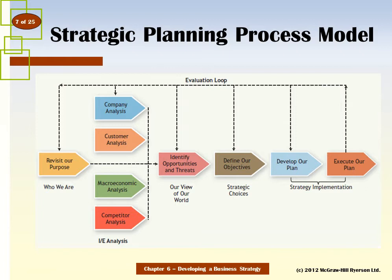The general steps in defining our strategic planning roadmap are as follows. First, revisit and understand our purpose and destination — making sure everybody in the company understands who we are. From there, conduct an internal and external analysis: understand our strengths and weaknesses, the customer's needs and values, the macroeconomic environment, and our competitors. We'll look at tools and models to help with this internal and external analysis.